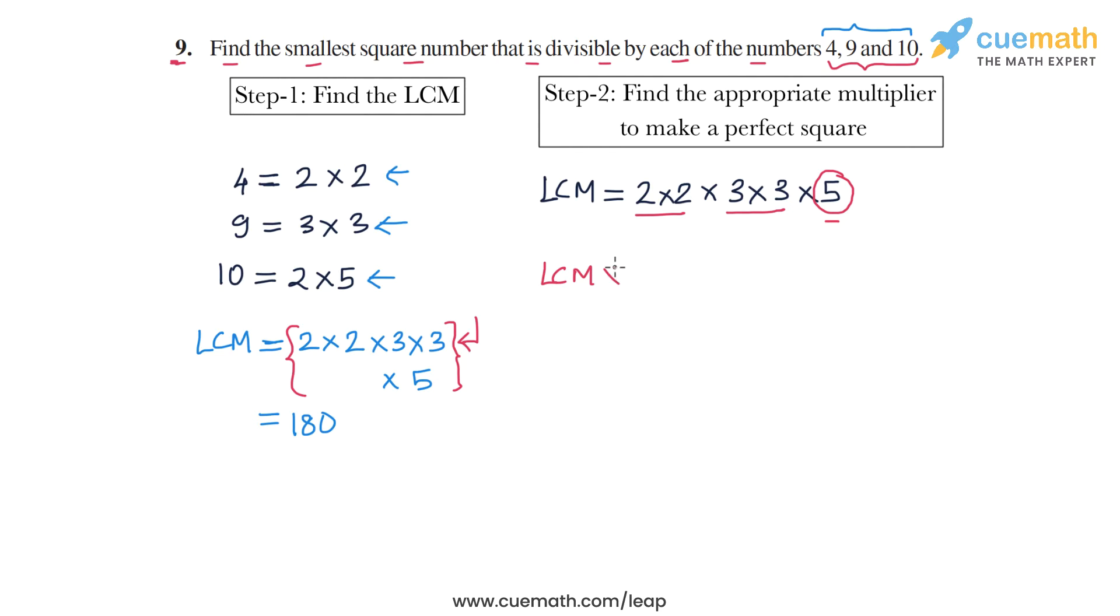So if you multiply the LCM by 5, you get the number 2 into 2 into 3 into 3 into 5 into 5. Now this number is a perfect square because it has a pair of 2, a pair of 3, and a pair of 5.